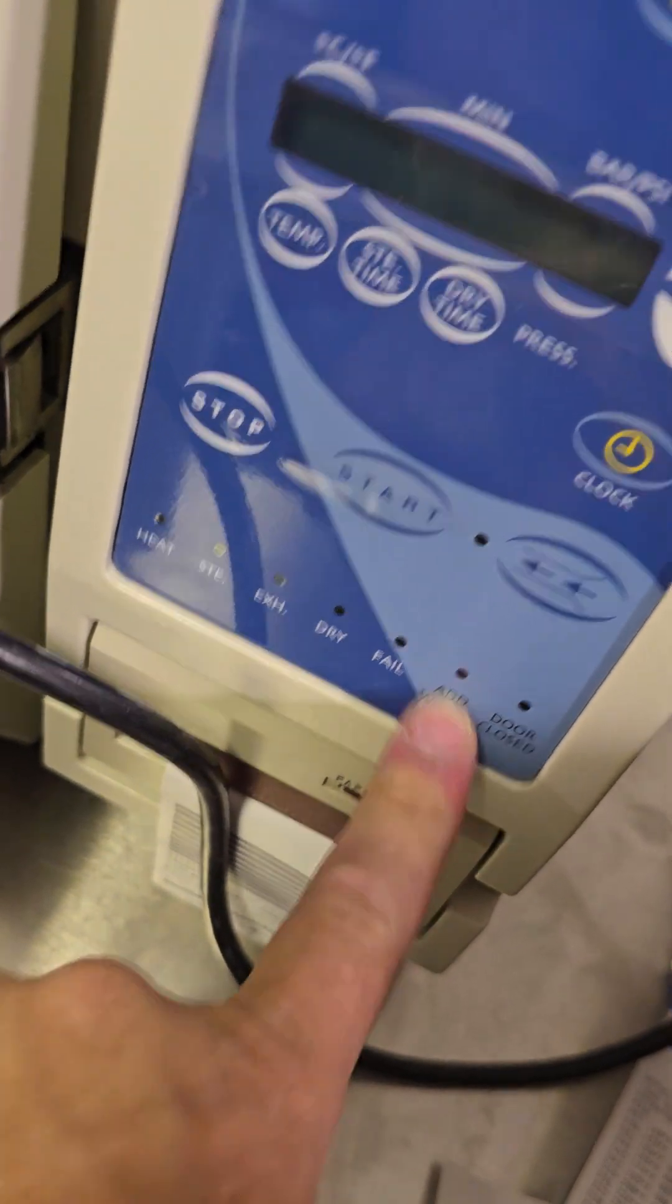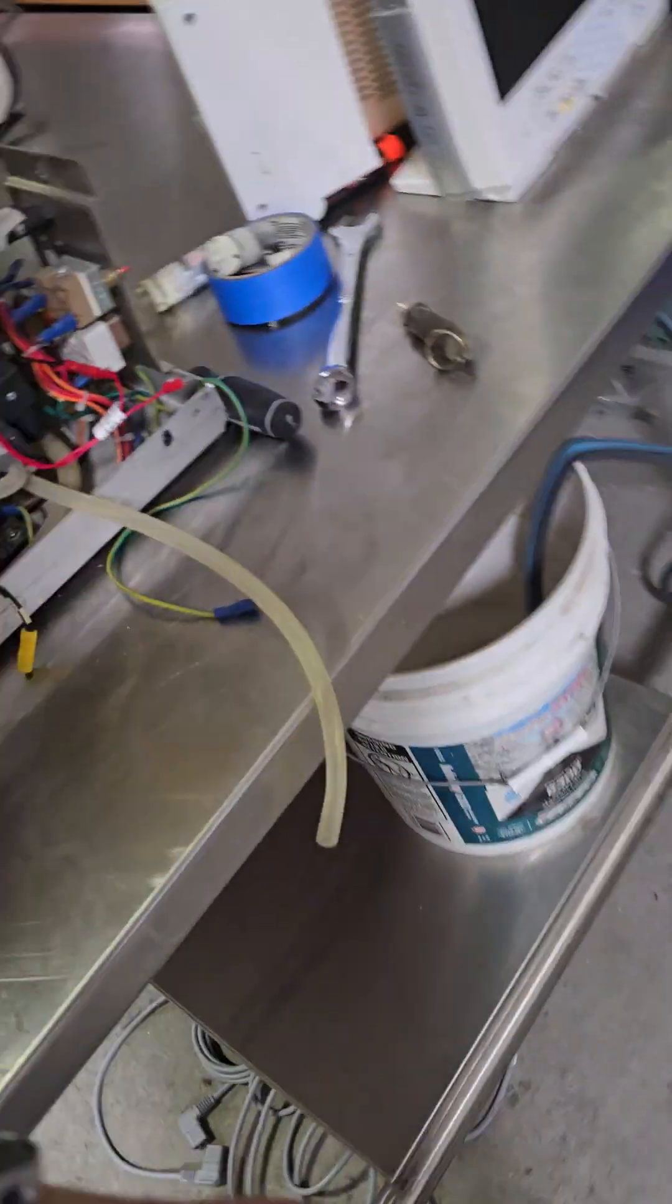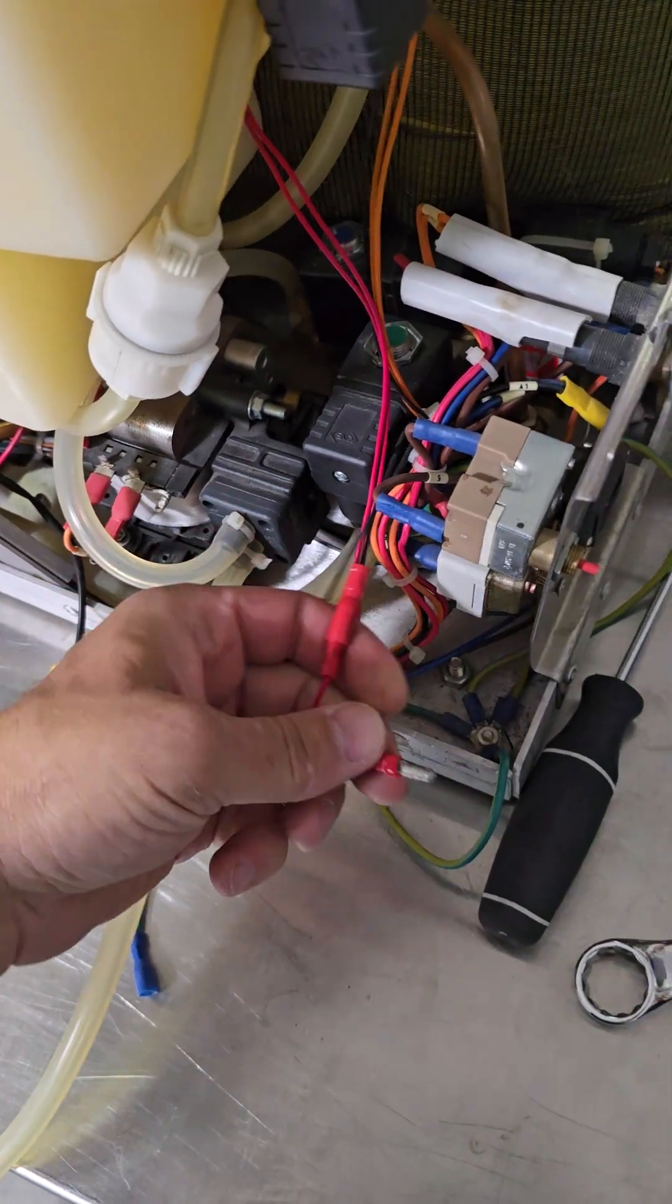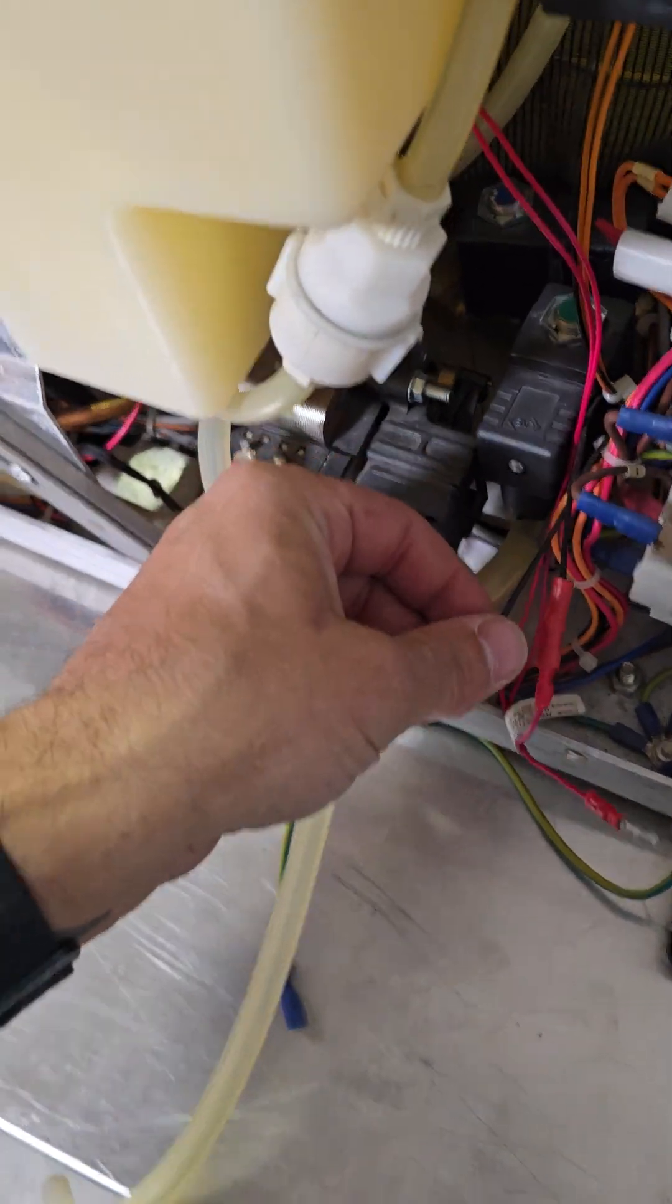If the add water light is still on, you have ohmed out these leads and verified that this is working properly. Check continuity on these two wires. Ignore that I just ripped one off.